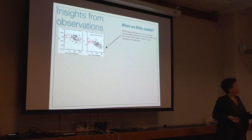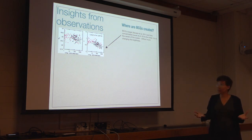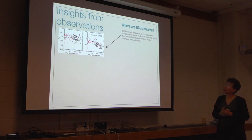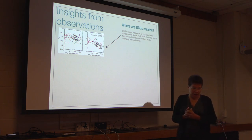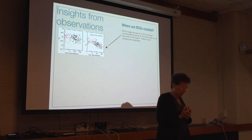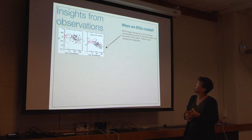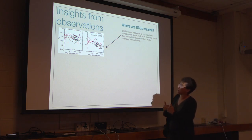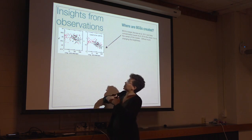If we put together some of the major insights from observations recently, there's a picture that can start to be built. If we ask where the BCGs are created — where the stars are, where the BCGs are created — we notice that BCGs are larger and less concentrated the closer they are to the cluster center.